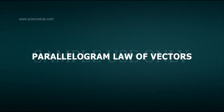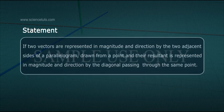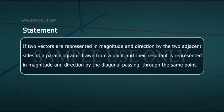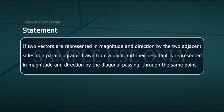Parallelogram Law of Vectors Statement: If two vectors are represented in magnitude and direction by the two adjacent sides of a parallelogram drawn from a point, then their resultant is represented in magnitude and direction by the diagonal passing through the same point.